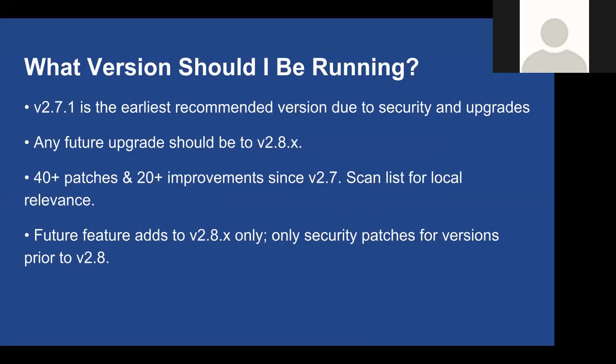A common question is: what version should I be running? Currently the latest released version is 2.8. We don't recommend anything earlier than version 2.7.1 due to various security and feature upgrades as well as bug fixes. There's really no reason not to upgrade to the latest available version, which is 2.8.x. Since the 2.7 release, we've done over 40 patches and over 20 improvements, all included in the documentation links shown previously.